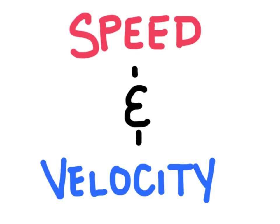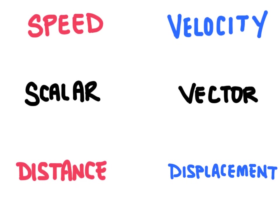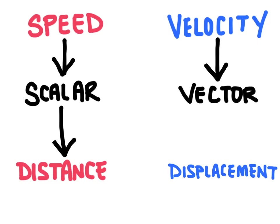In this video we're going to talk about speed and velocity. Speed and velocity are related to distance and displacement. Speed is a scalar — a unit of measurement that does not include direction — whereas velocity is a vector, which is a unit of measurement that does include direction. Speed can be calculated using distance; both speed and distance are scalar measurements. Velocity can be calculated using displacement, and both are vector measurements.